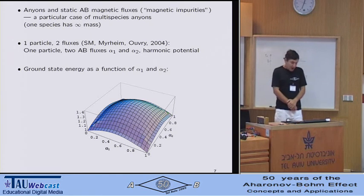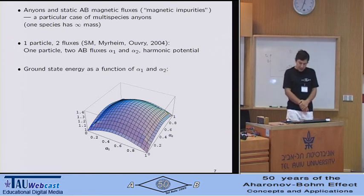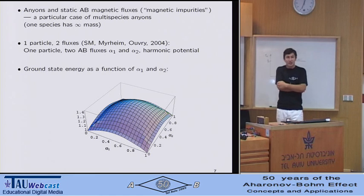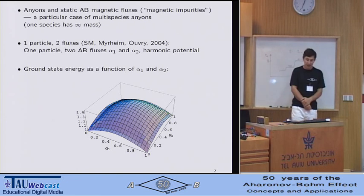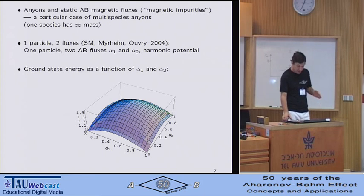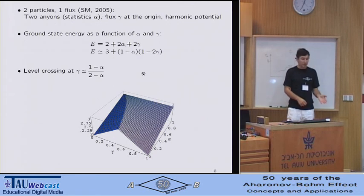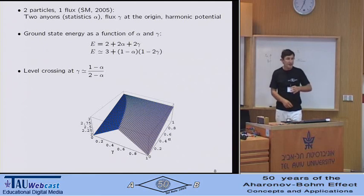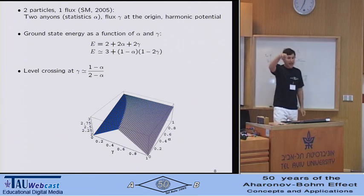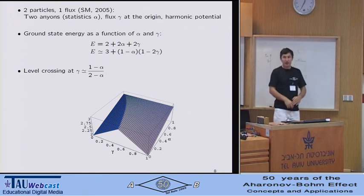For one particle and two fluxes we have studied the dependence of the energy eigenstate energies on the values of the two fluxes with the harmonic potential as a regulator to have a discrete spectrum and presented here is a plot of the ground state as a function of these two parameters. Again note that alpha equals one is the same as alpha equals zero when the flux is the multiple of the flux quantum.